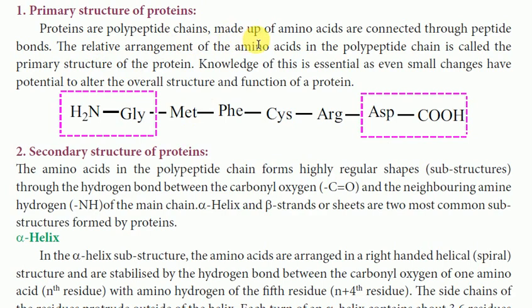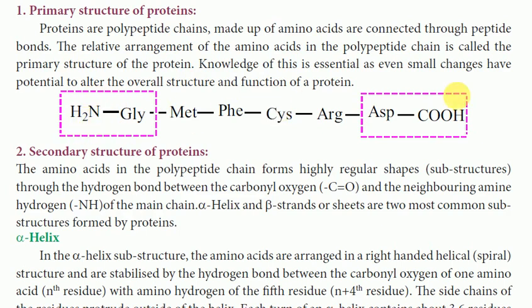The polypeptide chain is made up of amino acids connected through peptide bonds. A polypeptide chain has N number of amino acids. The relative arrangement of the polypeptide chain, from the N-terminal end in a linear chain, is the primary structure of protein.